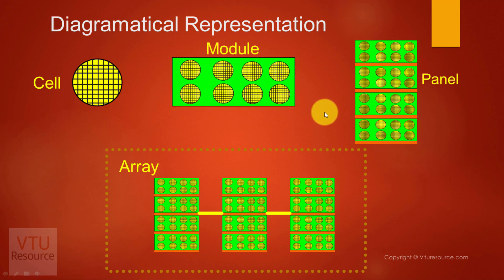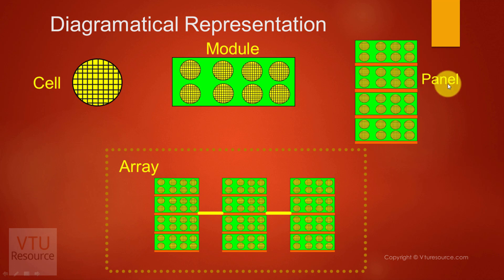These modules are interconnected either in series or parallel to form a panel. Solar panels are usually used in almost all signals — it might be road signals or railway signals.